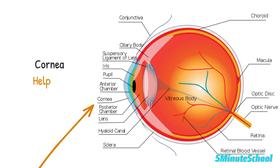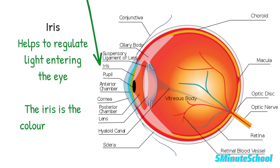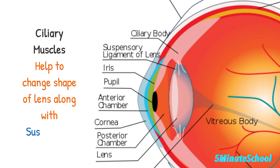The cornea helps to refract light rays, and the iris helps to regulate the amount of light entering the pupil — the iris is the colored part of the eye. The ciliary muscles are involved in changing the shape of the lens to help with focusing. The suspensory ligament holds the lens in place and is also involved in changing the shape of the lens.